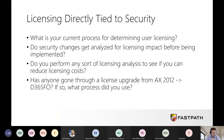There are some rhetorical questions you should start thinking about. What is your current process for determining user licensing? In most cases, unless a customer has already looked at external solutions, this is a fairly manual process — doing things through Excel outputs and trying to match up different things. Do security changes get analyzed for licensing impact before they're implemented? Most of the time, if customers don't have an external tool, the answer is no — they just assign security and worry about licensing later at renewal. In a perfect world, you'd want to do your license analysis alongside your security analysis. Do you perform any license analysis to see if you can reduce costs? Again, most customers may try, but it's such a manual process using native out-of-the-box tools that it can be very daunting.